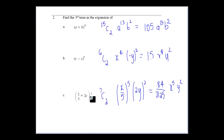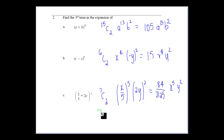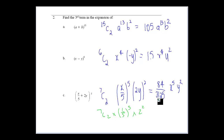For this expansion, it's 7C2 with x to the power of 5 — that's 7 minus 2 — and (2y) to the power of 2. You can then collect your terms. So 7C2 times (1/5) to the power of 5 times 2 squared gives us 84 over 3125. Throw that in the calculator and you'll get that expression.